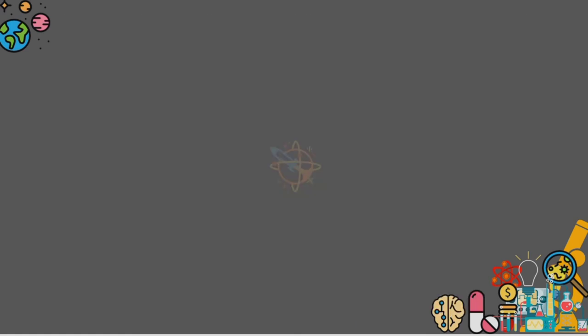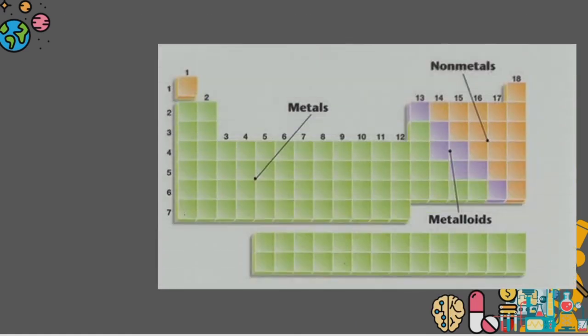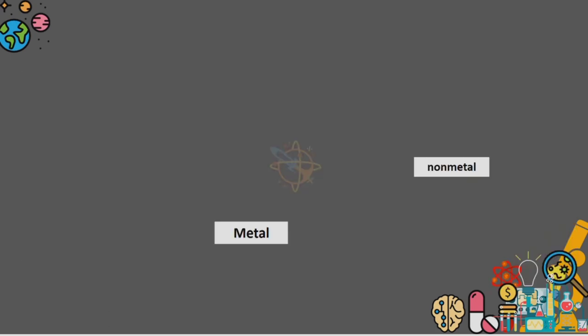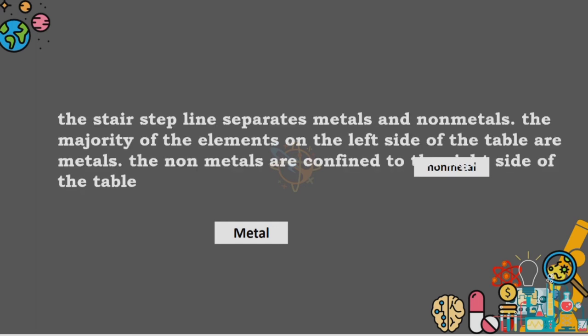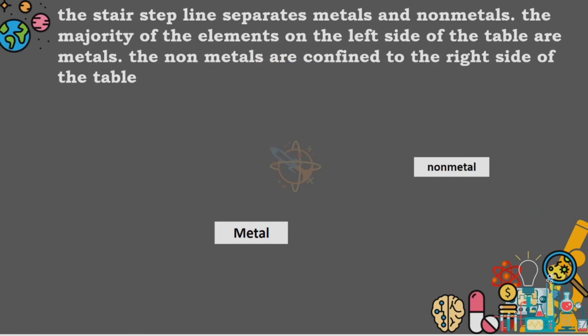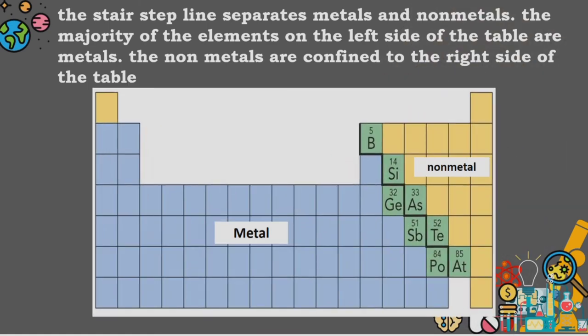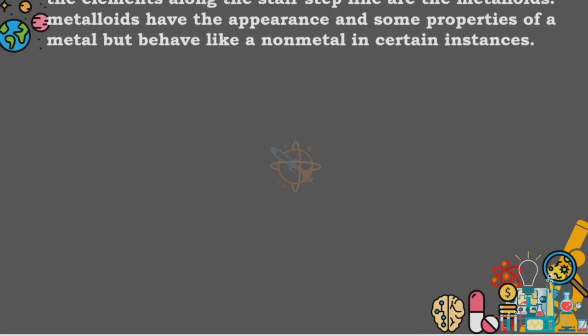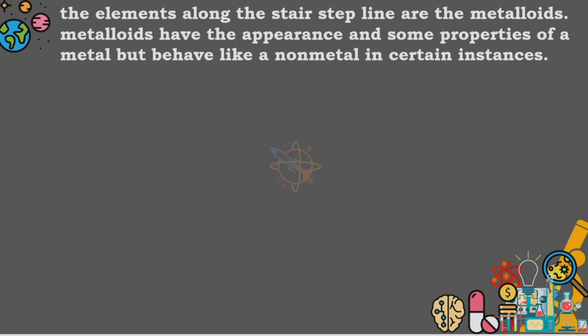We can use the periodic table to identify elements as metals, nonmetals, and metalloids. The stair step line separates metals and nonmetals. The majority of the elements on the left side of the table are metals. The nonmetals are confined to the right side of the table. The elements along the stair step line are the metalloids.